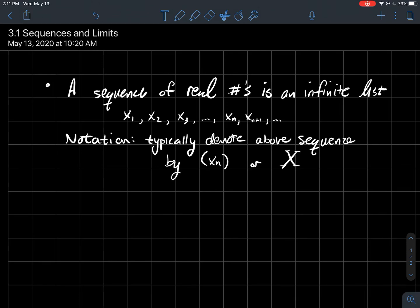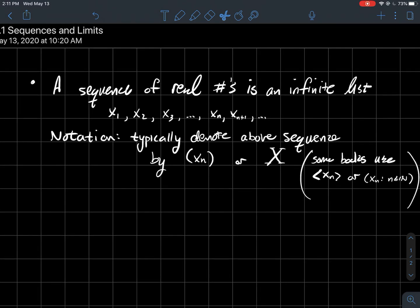And some notation for sequences. Typically we're going to denote a sequence by parentheses with xₙ or this capital letter X. But depending on what book you're looking at, some books use brackets instead of parentheses and another notation is xₙ such that n is a natural number. If you're wondering that kind of looks like a set, how come they didn't use curly brackets? The parentheses are supposed to respect that there's an order to this sequence. Whereas with curly brackets when you're writing a set, the order doesn't matter.